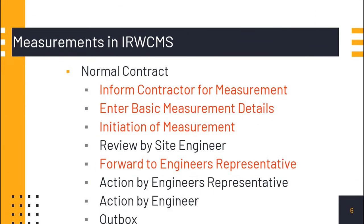Once you enter into the measurements module in IRWCMS and click on it, we will have two menus: one is normal contract and the other is zonal contract. We will click on normal contract. The process will be: inform contractor for measurement, enter basic measurement details, initiation of measurement, review by site engineer, forward to engineer's representative, action by engineer's representative, action by engineer, and then the outbox.